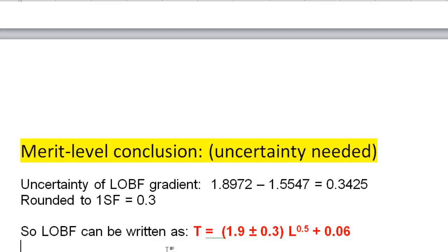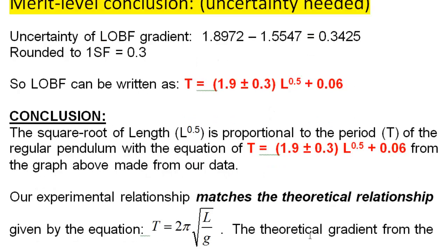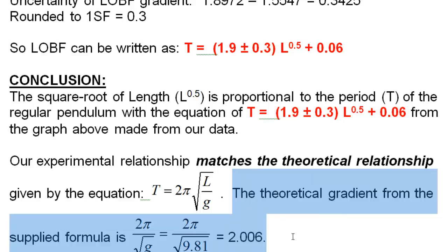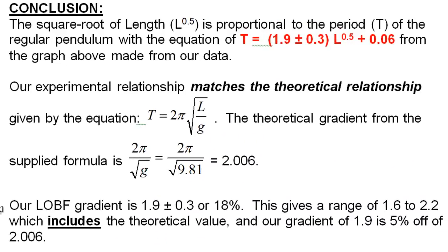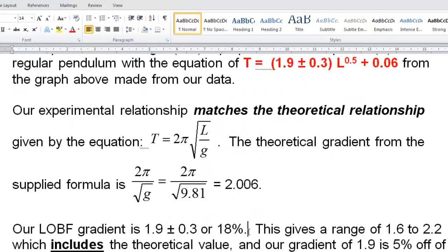Now, how you turn this into a conclusion for merit. Starts up exactly the same way. The only difference is we've now included our uncertainty on our gradient, which was the subtraction of the two gradients of the two lines on our graph. Second sentence pretty much starts out the same way. We have our experiment matches the theoretical gradient. But then we have a calculated theoretical gradient. So you're comparing yours to the theoretical, which is 2.006. And here's our blunt comparison. We have ours is 1.9 plus or minus 0.3. And that's 18%. You find that 18% with the unrounded values of this number divided by this number and then multiplied by 100. So it comes out to 18% in this case.